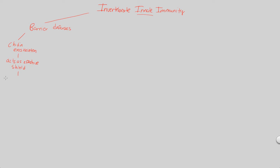Interestingly, chitin as an exoskeleton also lines the intestines of many insects. This is important because the intestine — specifically the small intestine — is where lots of absorption and chemical digestion occur, making it a gateway to the circulatory system. If a pathogen is accidentally ingested, the chitin lining of the intestine prevents it from reaching the rest of the organism.